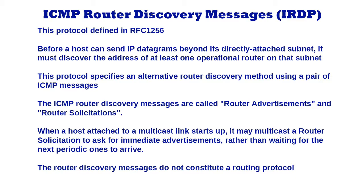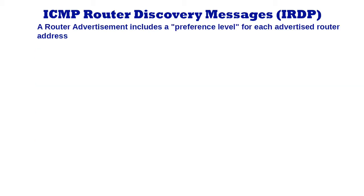If a host chooses a poor first-hop router for a particular destination, it should receive an ICMP redirect from that router identifying a better one. A router advertisement includes a preference level for each advertised router address. When a host must choose a default router address, it is expected to choose from those router addresses that have the highest preference level.